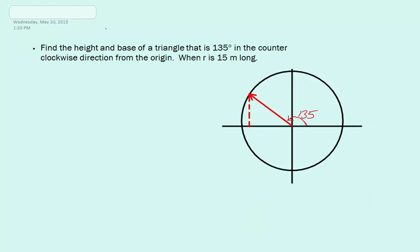If we look at our example below, we see that we have a right triangle in the second quadrant. The problem says they want us to find the height and base of a triangle that is 135 degrees in the counterclockwise direction from the origin, where R, or the radius, is 15 meters long. If we label the triangle, R is our radius, which can also be said as our hypotenuse, and we're trying to find the height and the base. We can find our theta by taking 180 minus 135 degrees to get 45 degrees.